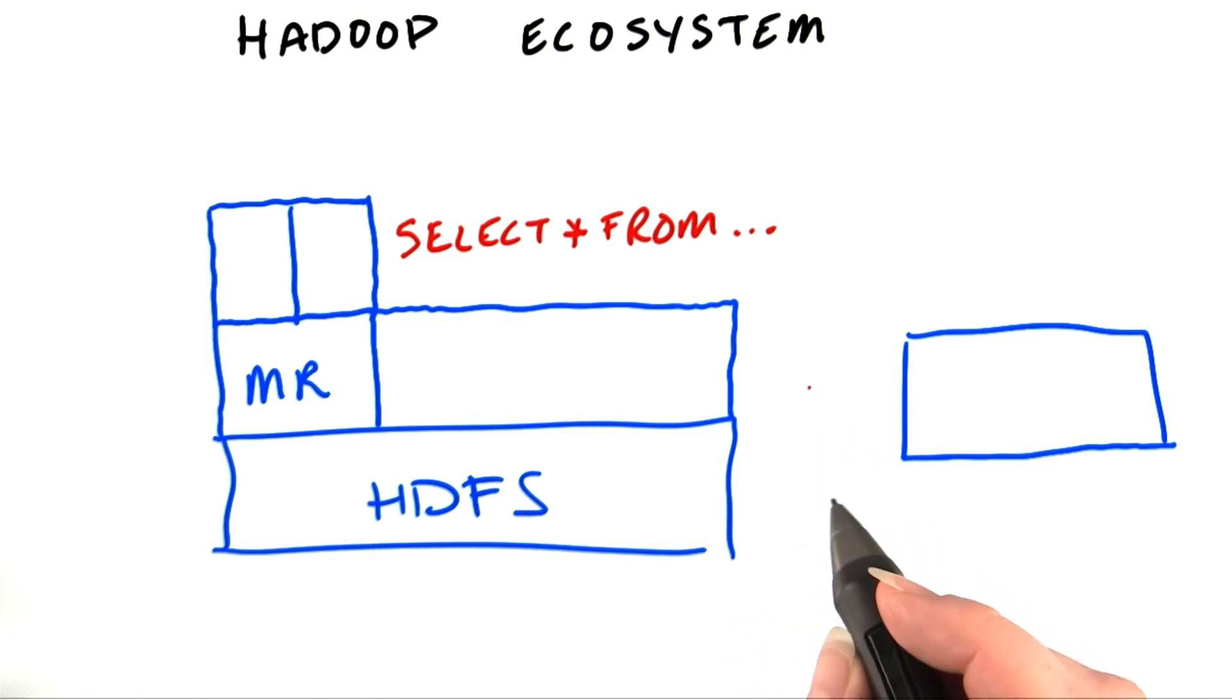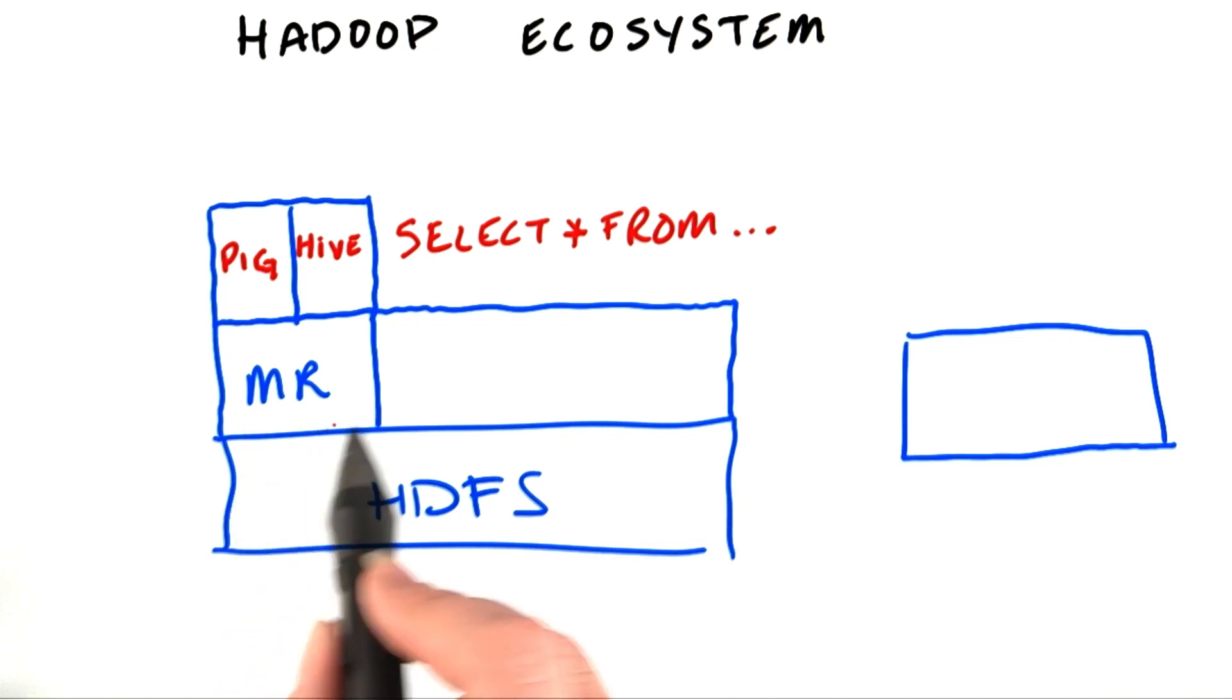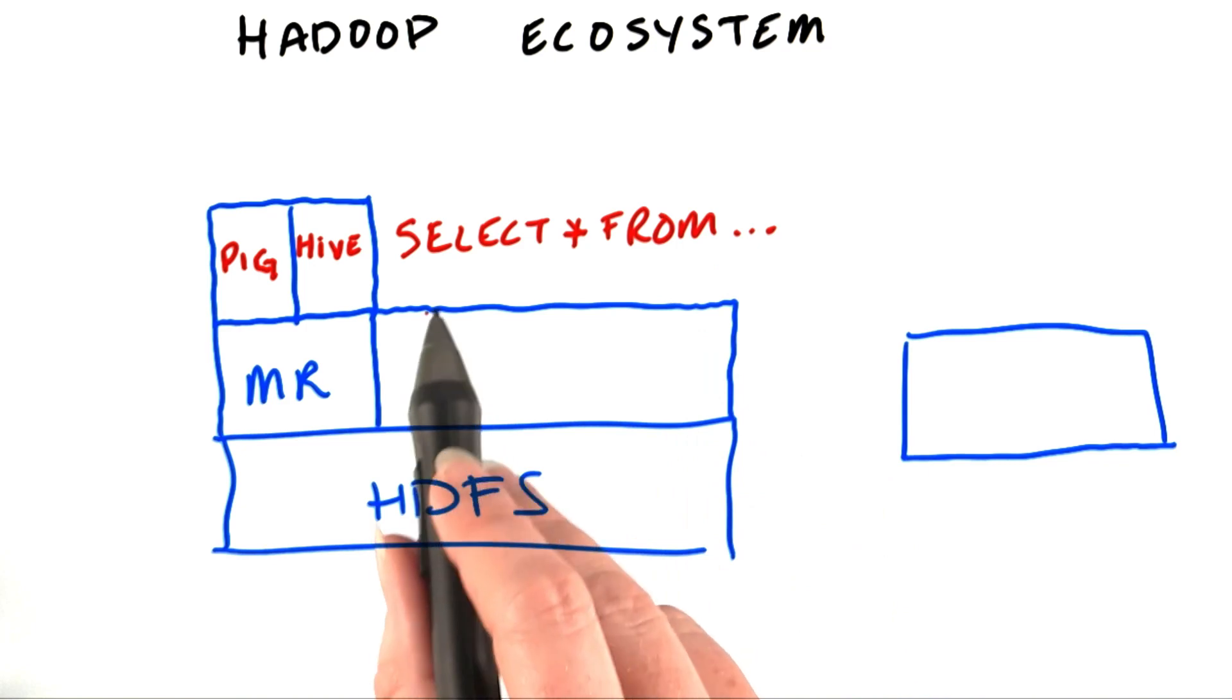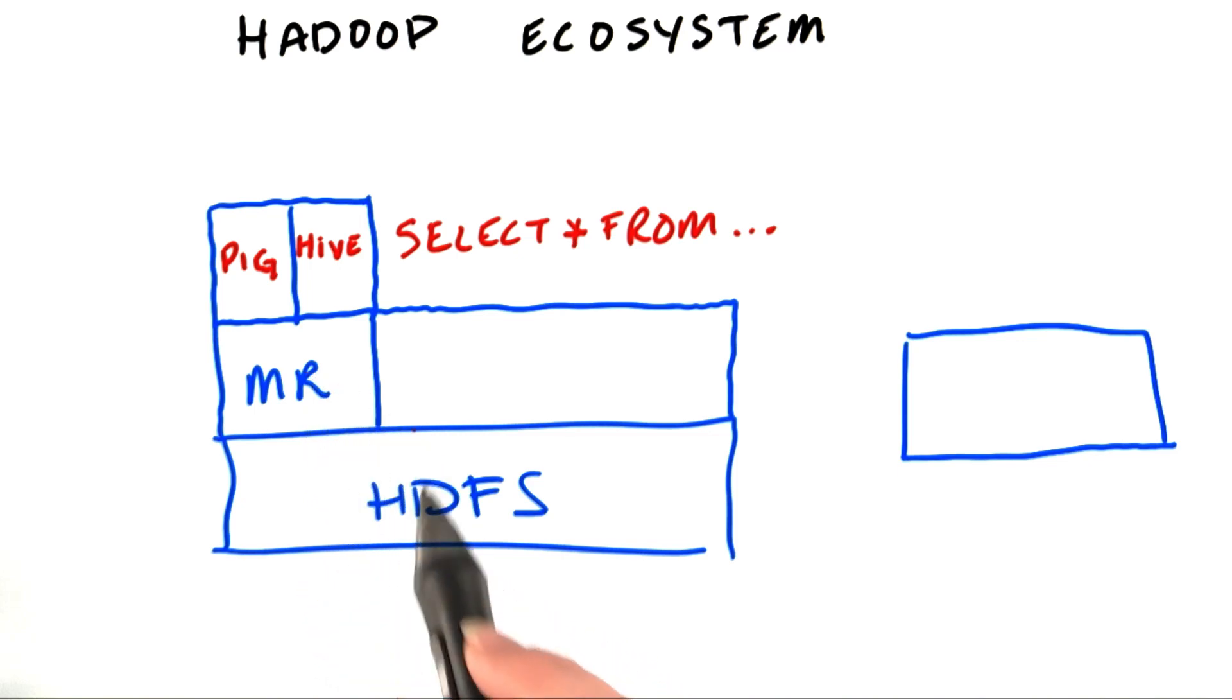Two key ones are Hive and Pig. Instead of having to write mappers and reducers, in Hive you just write statements like this, which look very much like standard SQL. The Hive interpreter turns the SQL into MapReduce code, which then runs on the cluster.